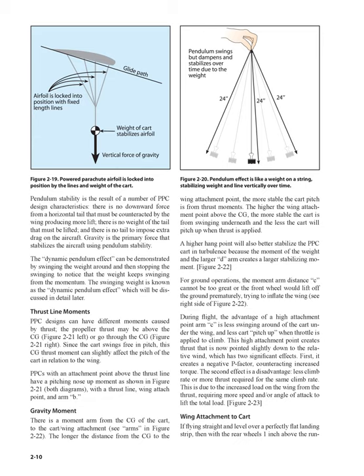Pendulum stability is the result of a number of PPC design characteristics. There is no downward force from a horizontal tail that must be counteracted, no weight of a tail that must be lifted, and no tail to impose extra drag on the aircraft. Gravity is the primary force that stabilizes the aircraft using pendulum stability. The dynamic pendulum effect can be demonstrated by swinging the weight and then stopping the swinging — the weight keeps swinging from the momentum. This swinging weight is known as the dynamic pendulum effect, which will be discussed in detail later.